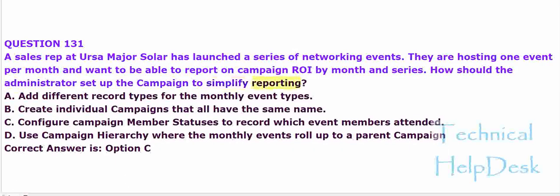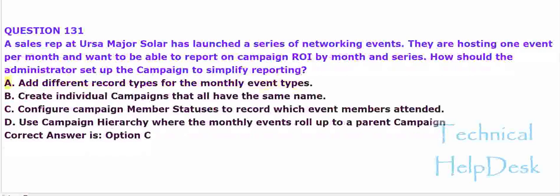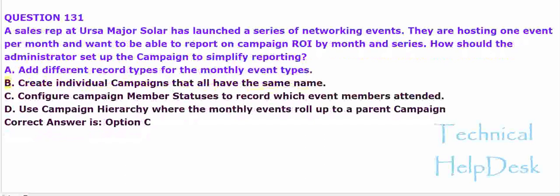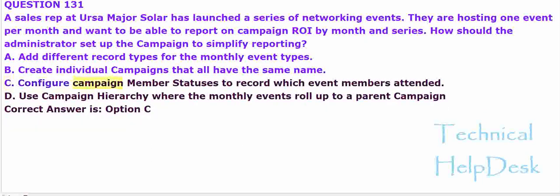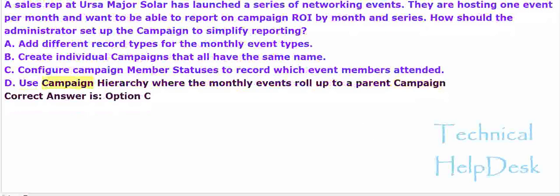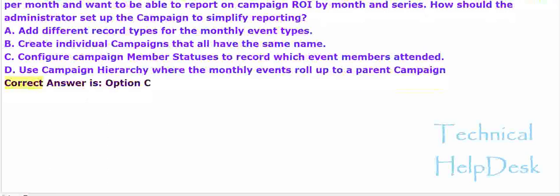A. Add different record types for the monthly event types. B. Create individual campaigns that all have the same name. C. Configure campaign member statuses to record which event members attended. D. Use campaign hierarchy where the monthly events roll up to a parent campaign. The correct answer is option D.